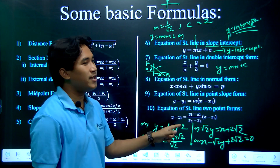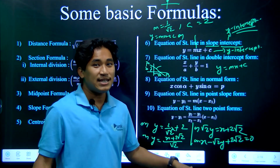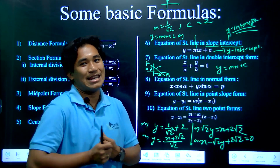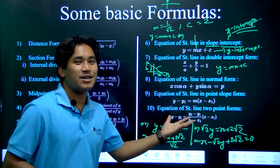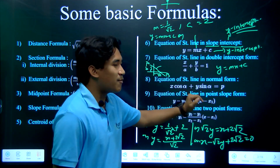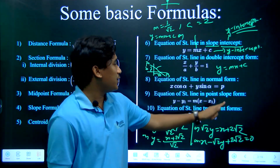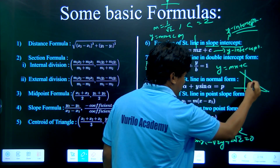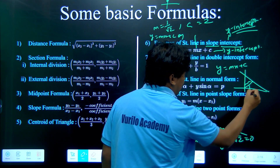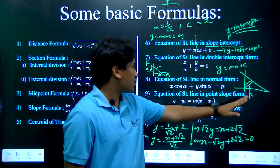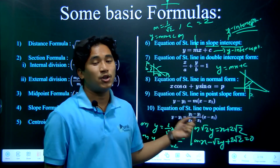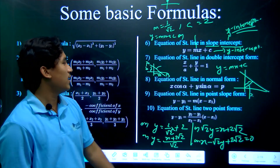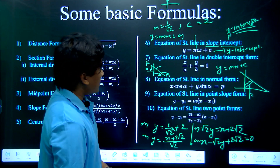We solve the equation of the straight line in double-intercept form. Now we have to do the equation of the straight line in normal form. It's called a cosine form, where B means the perpendicular. This is the same as the line called the perpendicular line. Then we use a perpendicular line — this is a straight line.